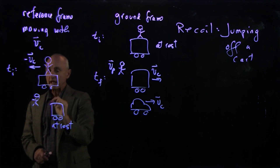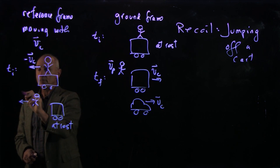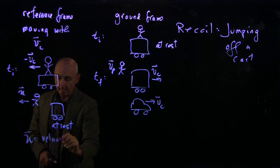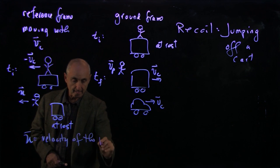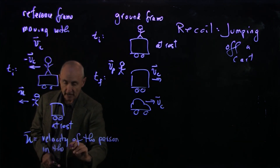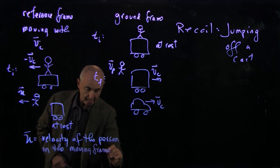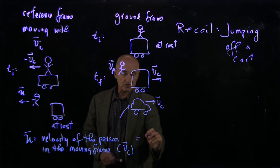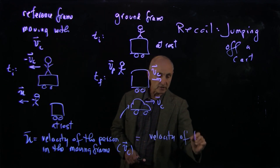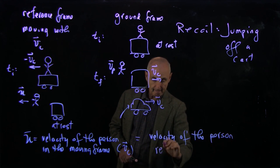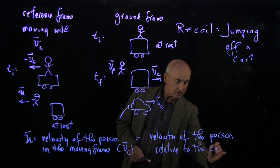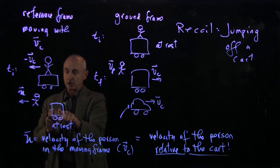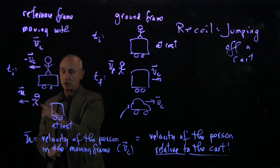What about the person jumping off? We'll use the symbol u for the velocity of the person in the moving frame — that is, the frame moving with velocity vc. This is the velocity of the person as seen by the cart, sometimes called the velocity of the person relative to the cart. In this moving frame, the cart is at rest and the person jumps with velocity u relative to the cart.